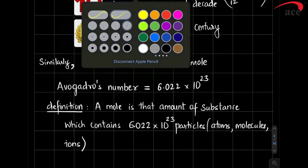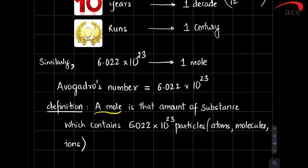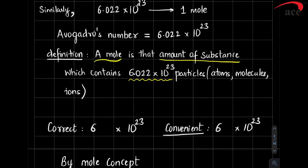Based on this, we have a definition of a mole. Mole is that amount of substance which contains Avogadro's number of particles. For some substances those particles are atoms, for some molecules, and for some ions. So if 6.022×10²³ particles are put together as one unit, that amount is called one mole. Note: 6.022 is the correct Avogadro number; 6.023 is the convenient Avogadro number.